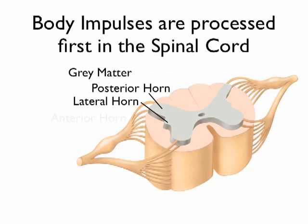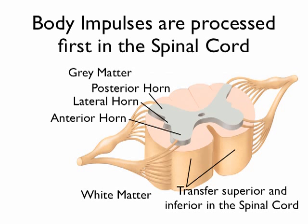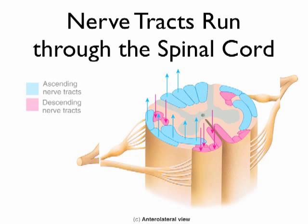In the gray matter of the spinal cord, we have a posterior horn, a lateral horn, and an anterior horn of gray matter — you should be able to identify those. Different things are happening in each of those various areas. In the white matter, if you were using your x-ray vision looking down into this, you would see tons of axons running up and down through the spinal cord, carrying messages up to the brain or down to the muscles. We've actually mapped out these nerve tracts — each little circle is a nerve track running through the spinal cord.